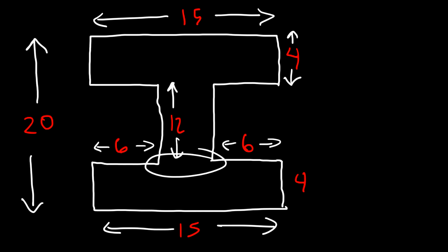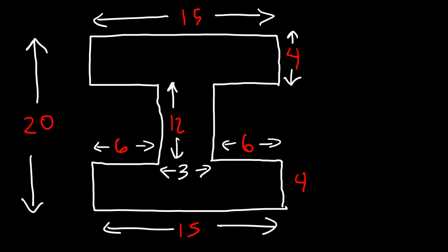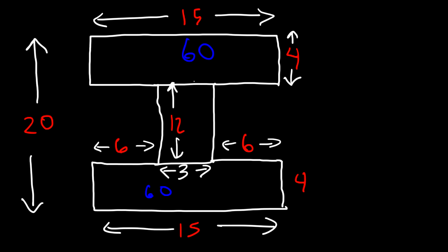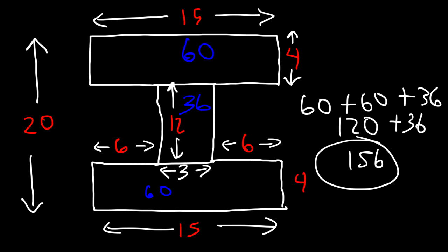The length of the top segment is 15 minus 6 minus 6 equals 3 units. Now we calculate: each outer rectangle is 15 times 4 equals 60, and since the figure is symmetrical, the other side is also 60. The middle rectangle is 12 times 3 equals 36. Total area: 60 plus 60 plus 36 equals 156 square units.